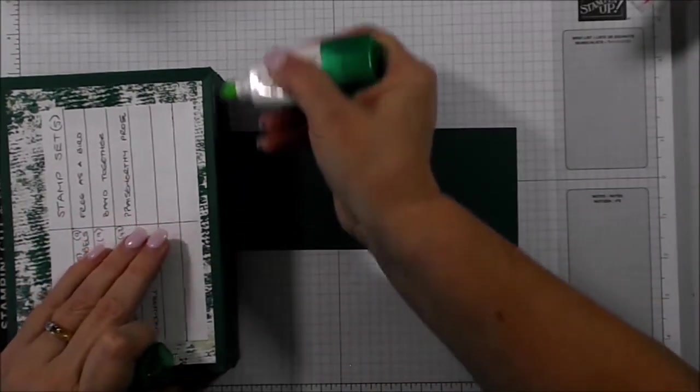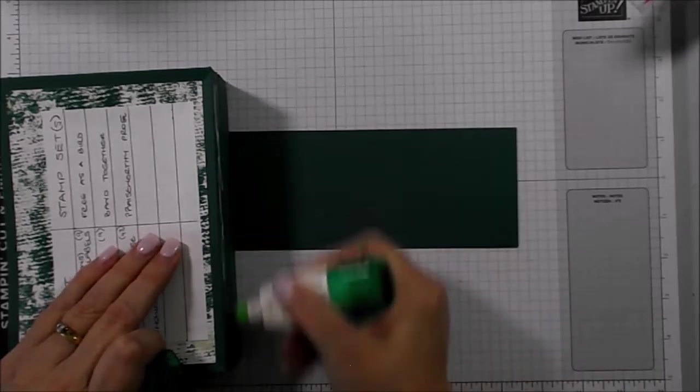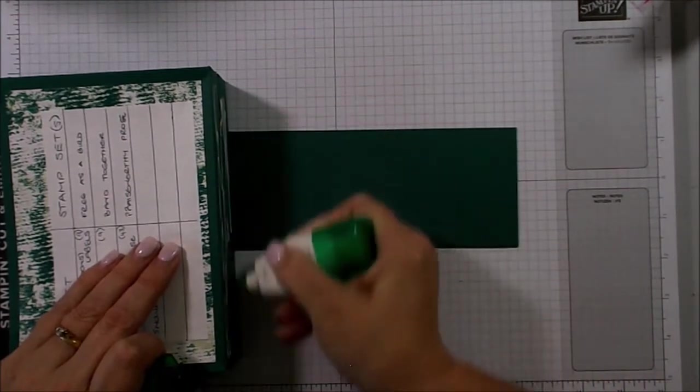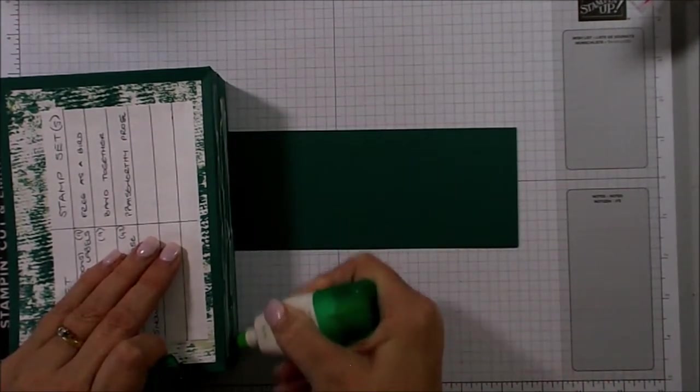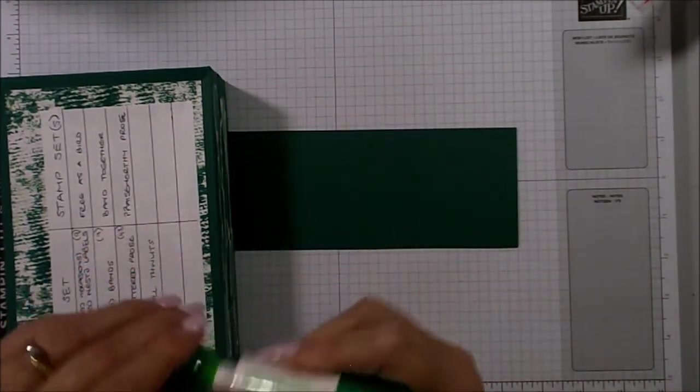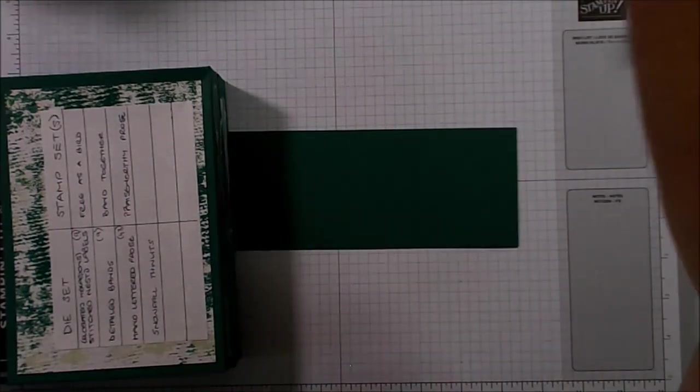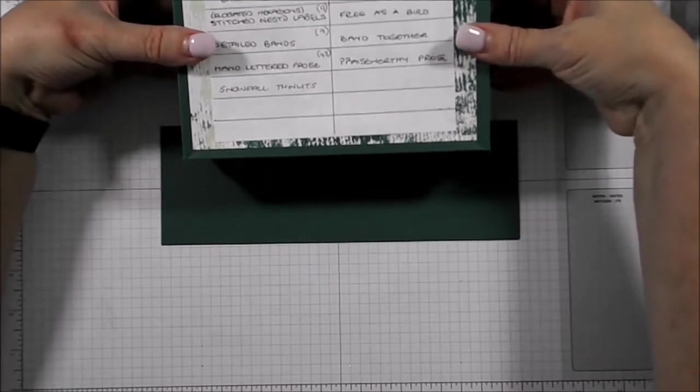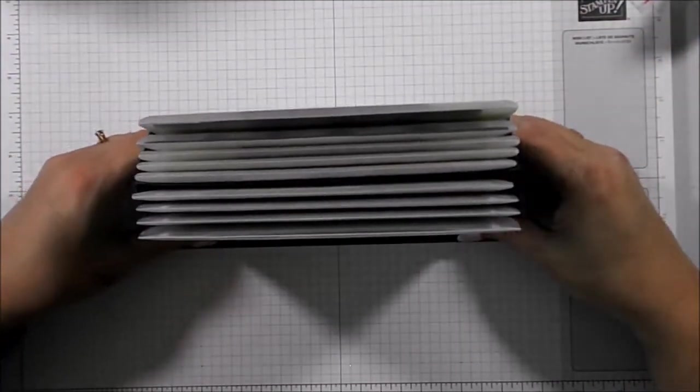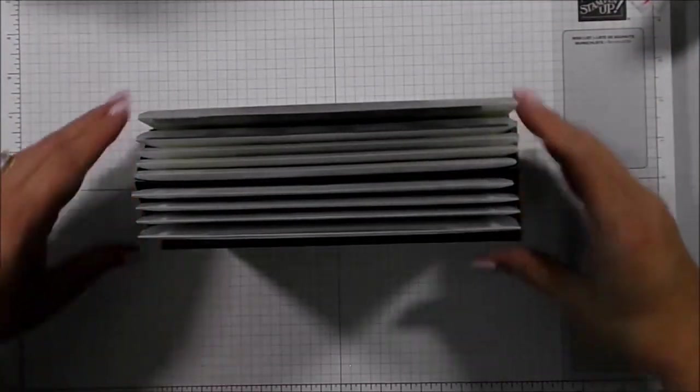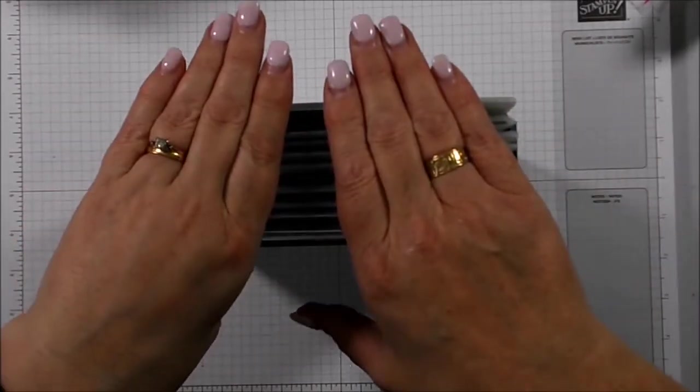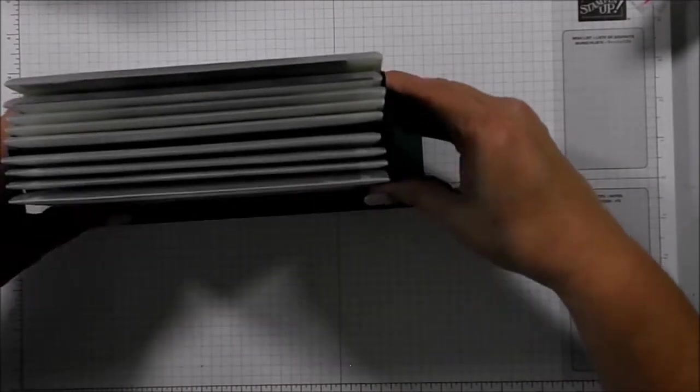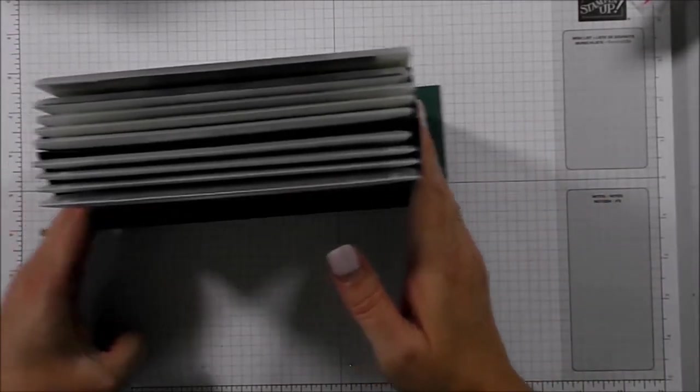In with the Tombow again. Lots and lots of Tombow. Now, yes, I know it might have been easy to take the sets out, but I don't mind them being in there. And we're just going to bring that up. It's about even there. And the weight of the die set will actually force that down onto the cardstock stand.